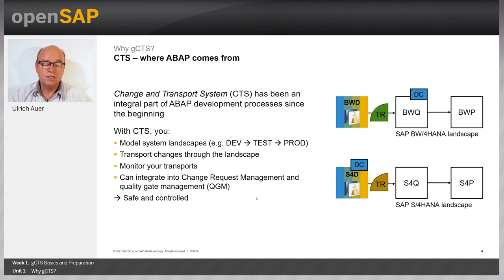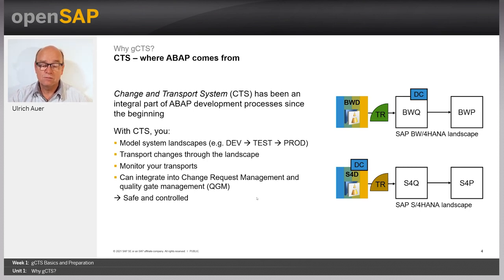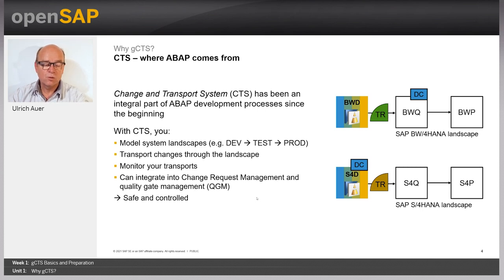You configure a system landscape with transport routes defining how changes make their way through quality assurance, test, and training systems until they finally end up in the productive system. You may also use tools to handle transport requests and import them in the correct sequence, and process tools like change request management to keep the house clean. With CTS Plus, non-ABAP systems could also be included in similar processes.